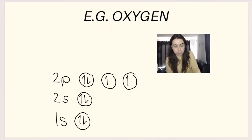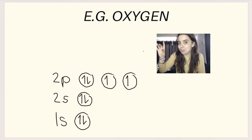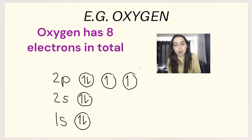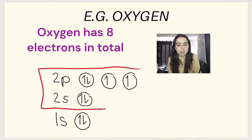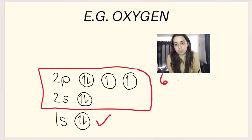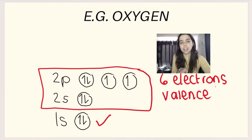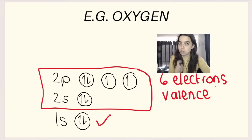If you draw the Aufbau diagram for oxygen — and I'll link my video on Aufbau diagrams here if you need a recap — you'll see that the outer energy level, which is energy level two, is not full. Energy level two has six electrons. Because these are the electrons in the outer energy level, we call them valence electrons, and those are the electrons involved in bonding and drawn in our Lewis dot diagrams.